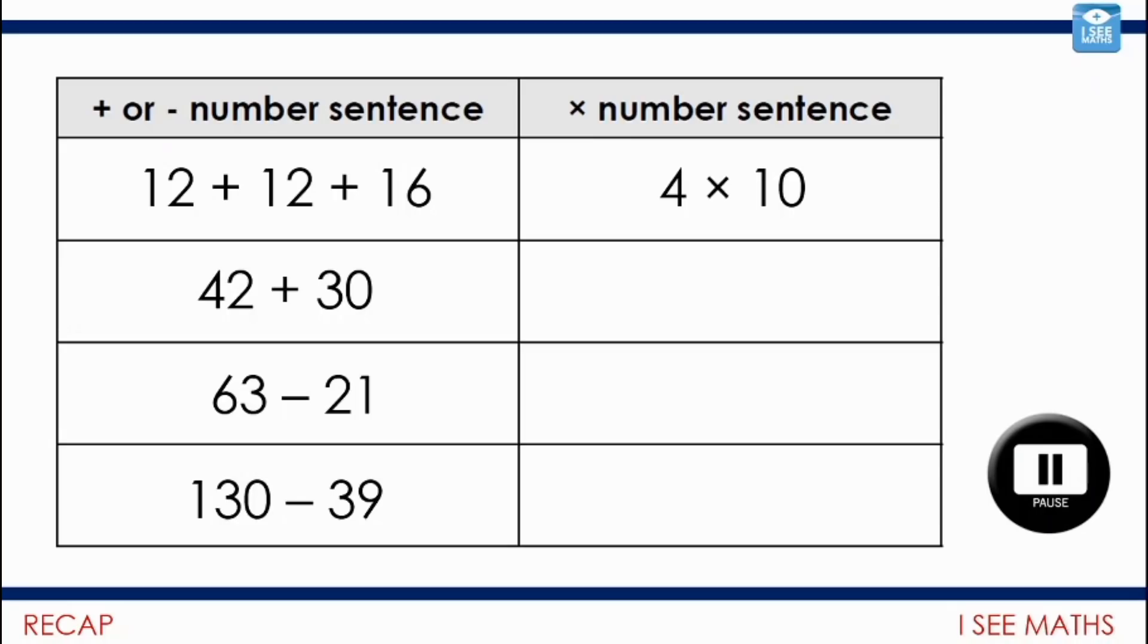Okay, well, let's have a look. So, 42 and 30. Do you think of a factor, a number that you can multiply to make 42 and 30? Well, the one that I went for was 6. So, 6 times 7 is 42. 6 times 5 is 30. So, 7 add 5. How many lots of 6 in total? 12 lots of 6.